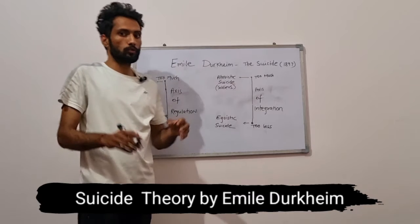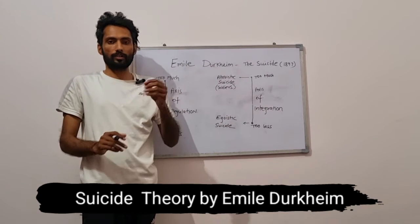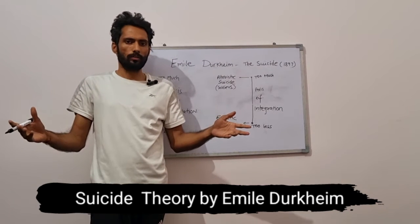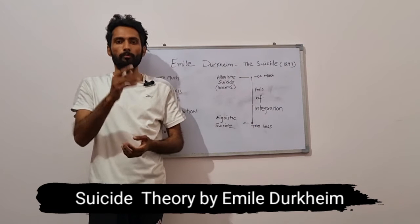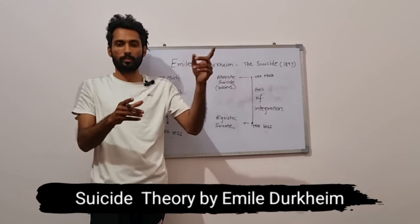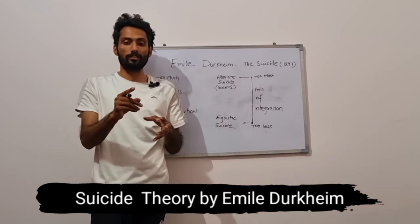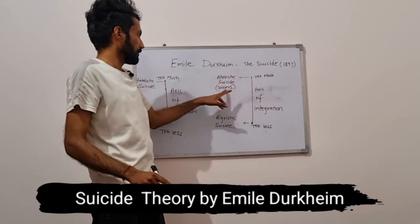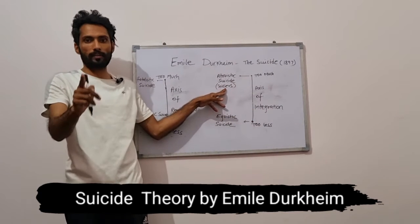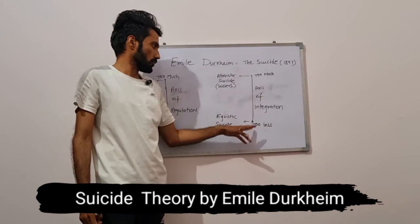Where there is too much integration in a society, we can see a particular kind of suicide. For example, a soldier on the border of a country goes to defend the country — he knows he will die, he will face the bullets of the enemy, and he ultimately decides to give up his life for the society. The integration level of that soldier with the country, the culture, the customs, and the system is very intense. He is too intensely integrated with society, and this is what causes him to give up his life. This type of suicide is called altruistic suicide.